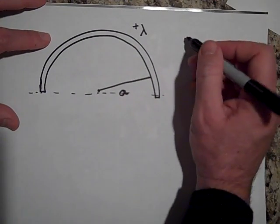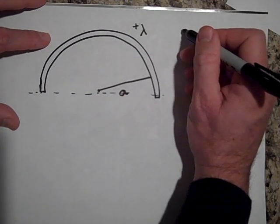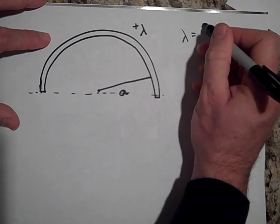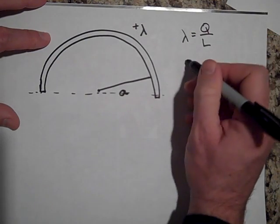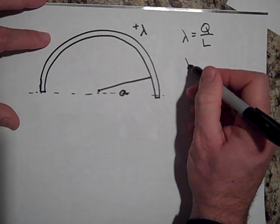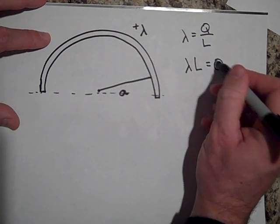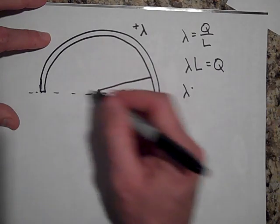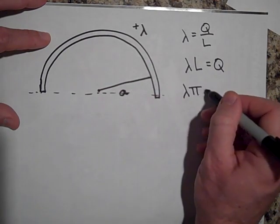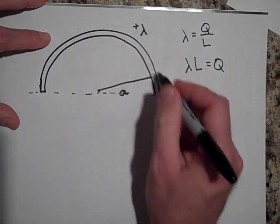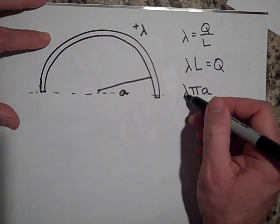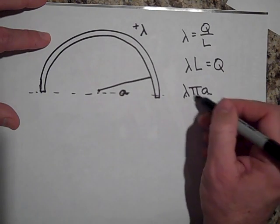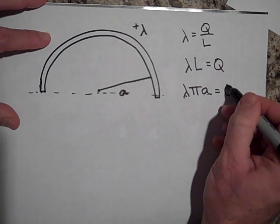Okay, the total charge on this whole thing is going to be - since lambda equals charge per length - if I just multiply lambda times length that gives me the charge. So that would be lambda times the length of this thing is pi times A. Two pi A is for a circle, so half a circle is pi A. So lambda times length is equal to the charge.